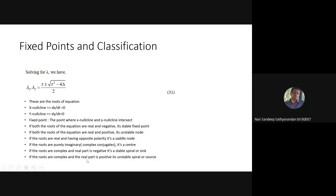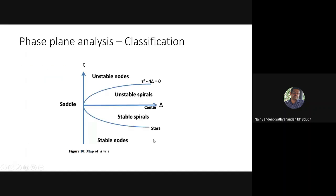If the real part is zero, it is a center. If the roots are complex with a positive real part, that means it is an unstable spiral — the spiral keeps expanding and won't converge. We can represent these cases in the tau-delta axis.